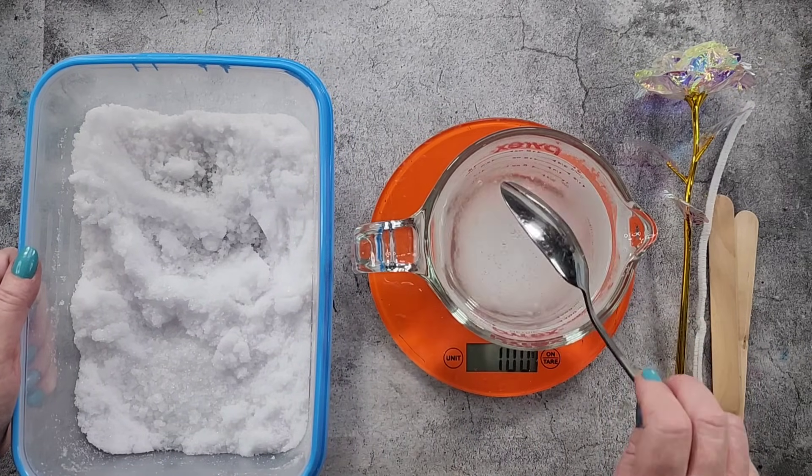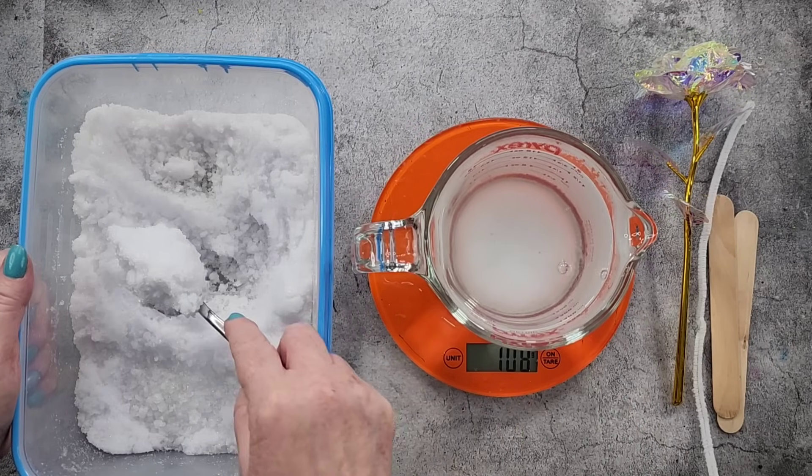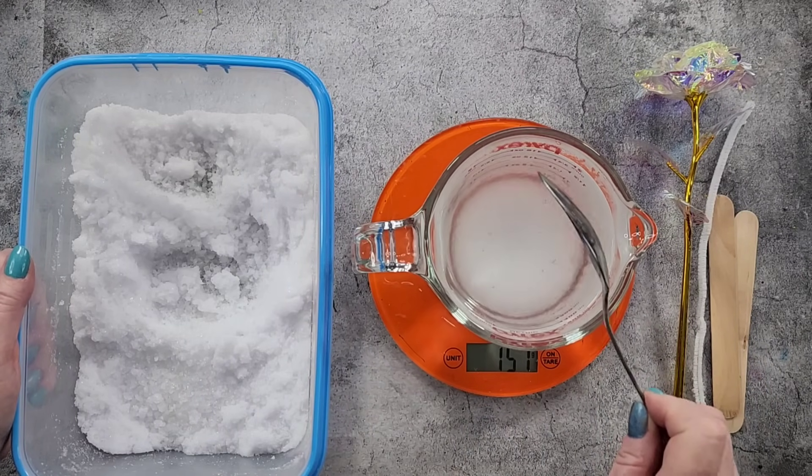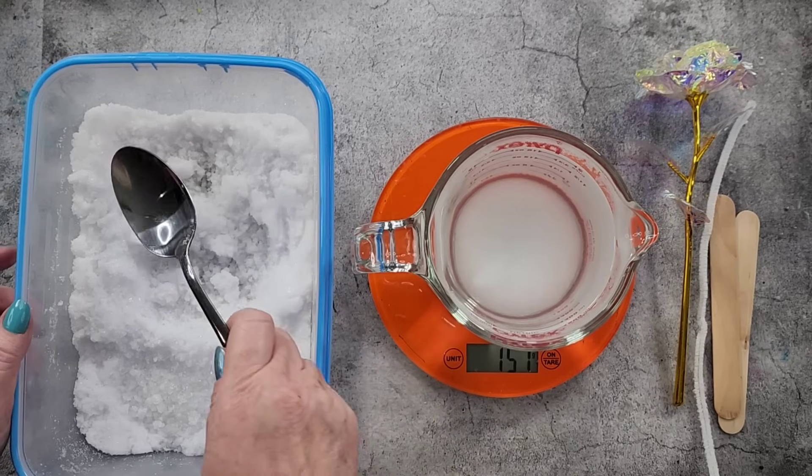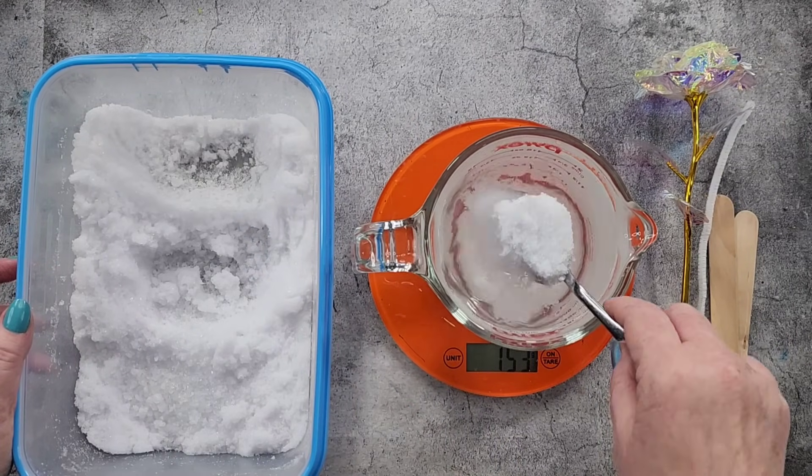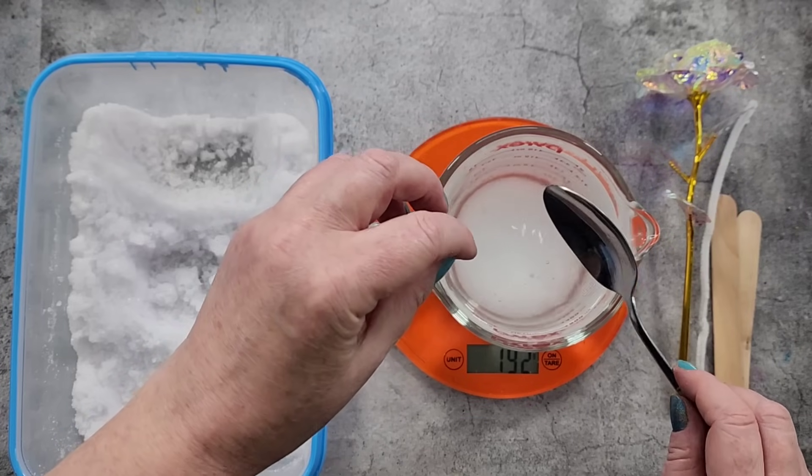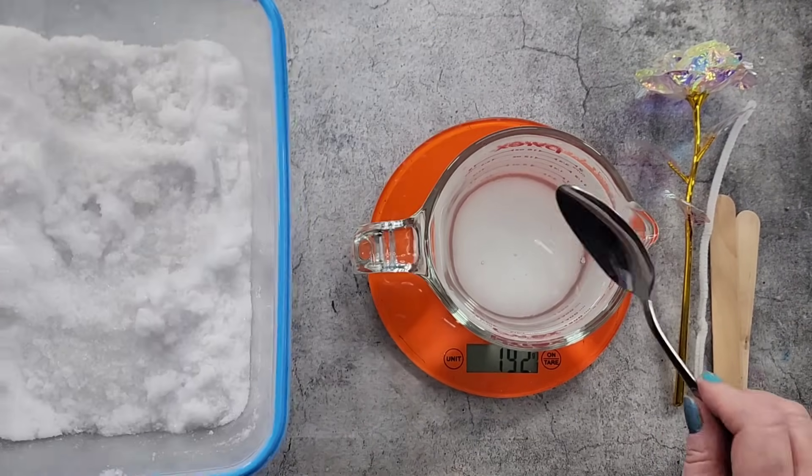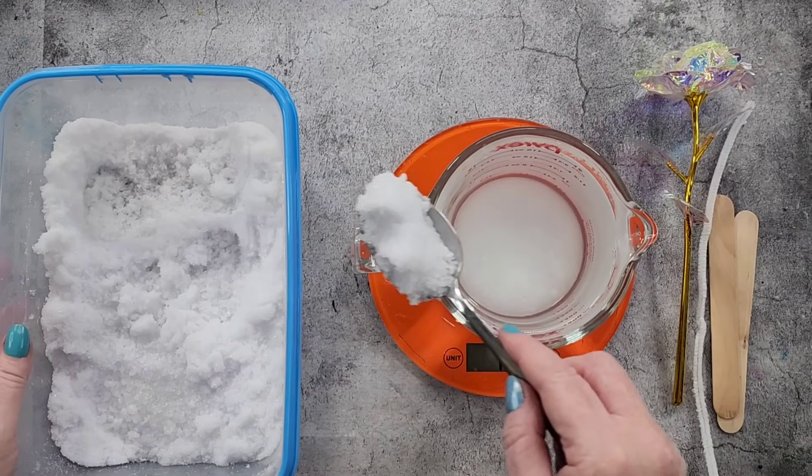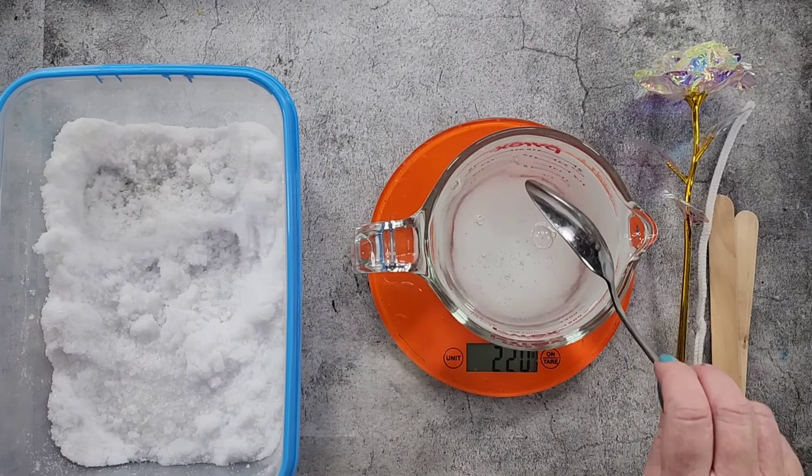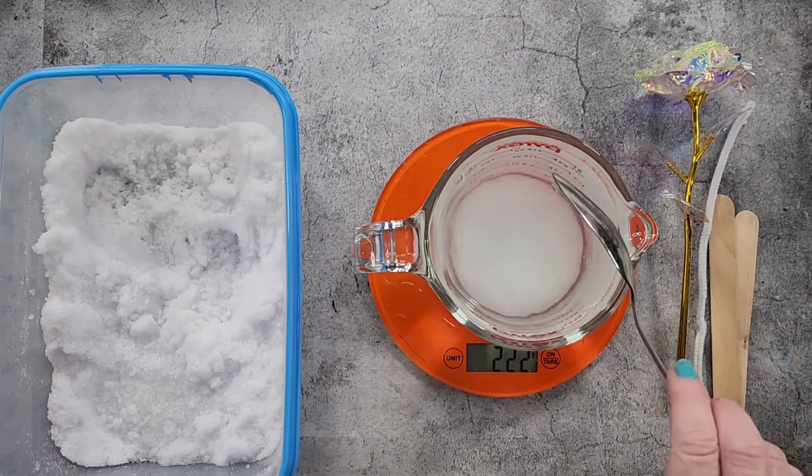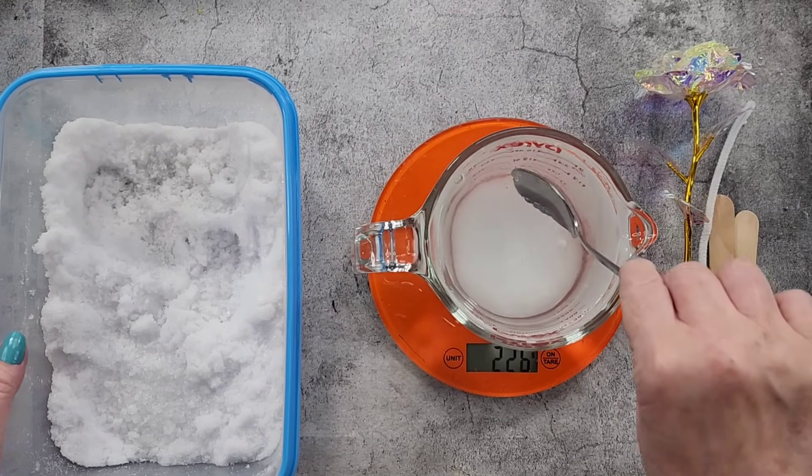So pop that in there. So 90 grams per 200 milliliters. So I need 225. I wouldn't pour this in. I tried that once. I just sort of poured and it splashed everywhere. So don't do that. We'll just go slowly with the spoon. 220, 225, okay.